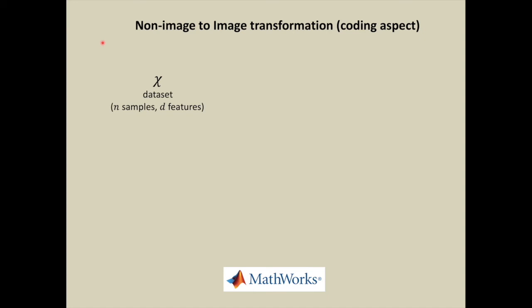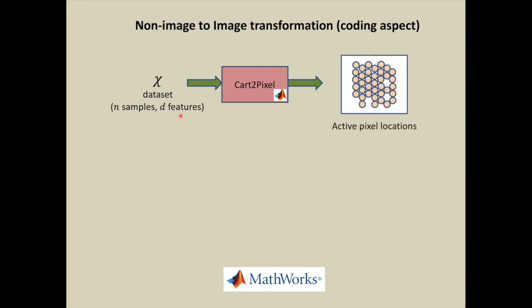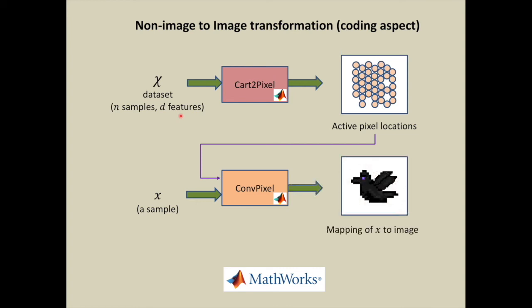Let us see the coding aspect of non-image to image transformation. A training dataset X with n samples and d features is given, which is sent to cart2pixel function. This gives active pixel locations of features. These pixel locations and a sample X are given to conv2pixel function, which gives mapping of X to image. All the codings are done in MATLAB software.